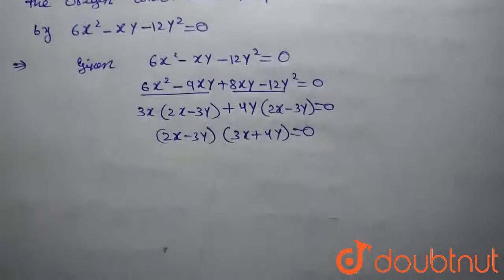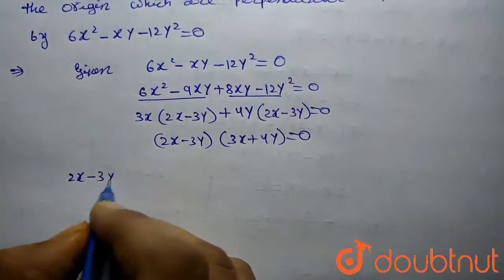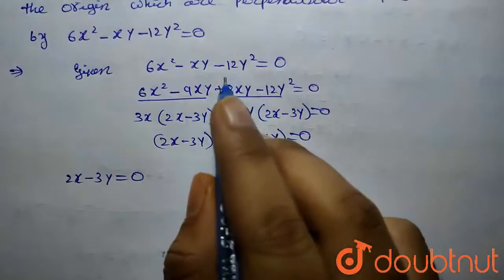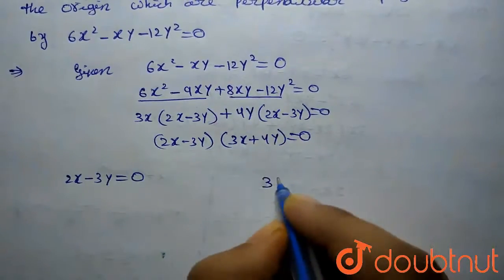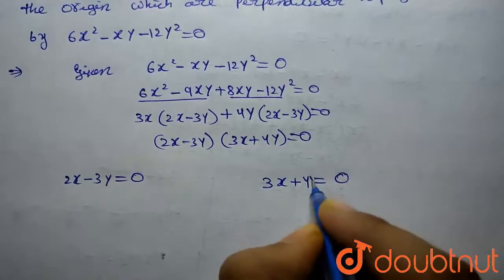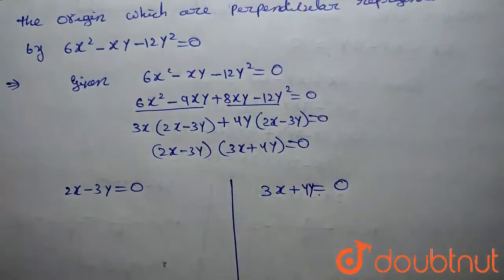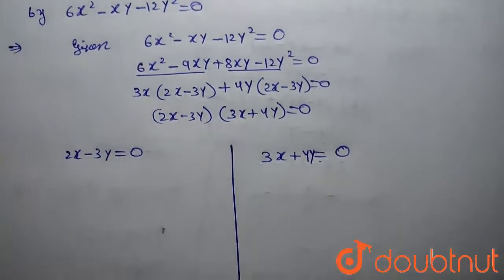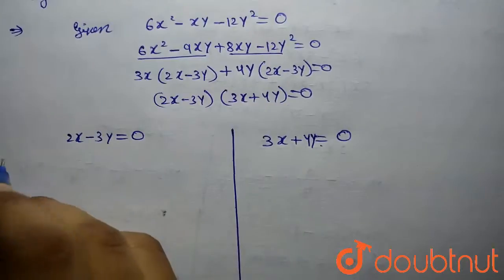This implies that 2x minus 3y equals 0 is one of the equations, and 3x plus 4y equals 0 is the other equation. We now need to find the perpendicular lines to these two equations, so first we find the slope of each.